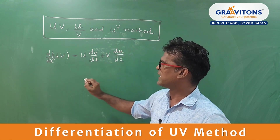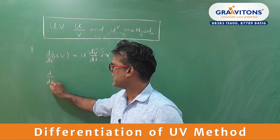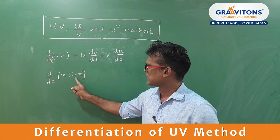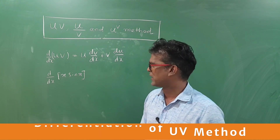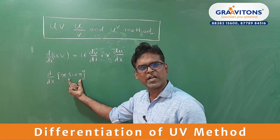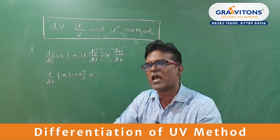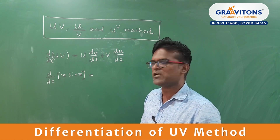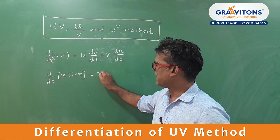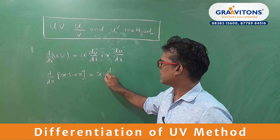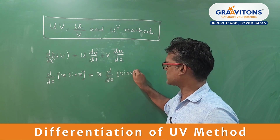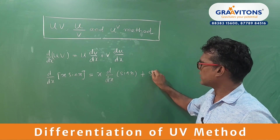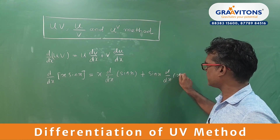So like that we can remember this very easily. For example, d by dx of x into sin x. This is obviously the UV method. So x is one student and sin x is another student. These two are coming to clarify their doubt. Now x is waiting while sin x is clarifying his doubt, so we write x times d by dx of sin x. Now sin x is done, so x has to clarify — we write sin x times d by dx of x.